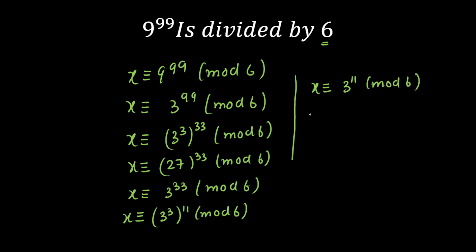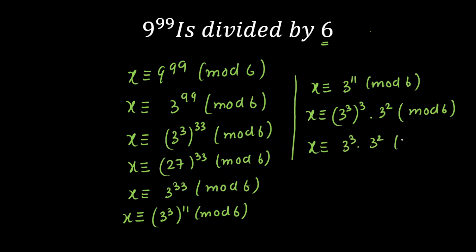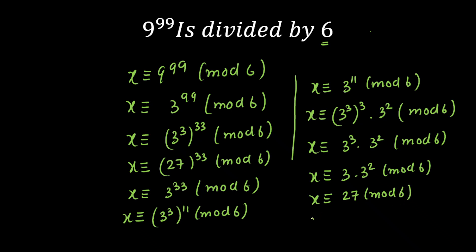After this, we will break this into parts. You can write this as 3 raised to the power 3, whole raised to the power 3, that is 3 raised to the power 9, and the remaining power is 3 raised to the power 2. So total power is 11, mod 6. I know that if I see 27, I can immediately divide and write 3 raised to the power 3 again. Combined with 3 squared, mod 6. Again dividing, I get x is congruent to 3 multiplied by 3 squared, mod 6. That gives x is congruent to 3 cubed, again 27, mod 6. Dividing again gives x is congruent to 3, mod 6. This number is continuously decreasing and our final answer is the remainder is 3. I cannot decrease further because this number is less than 6, so that is the final answer.